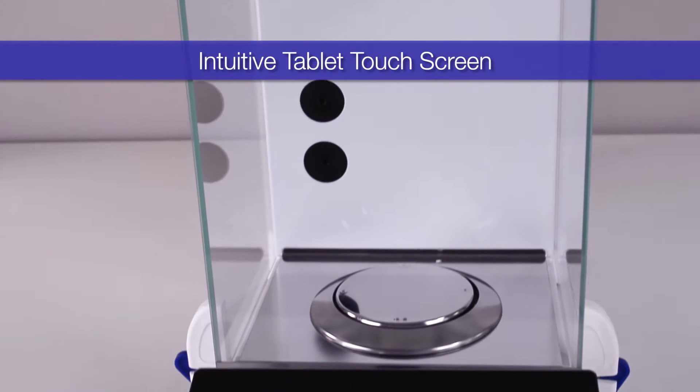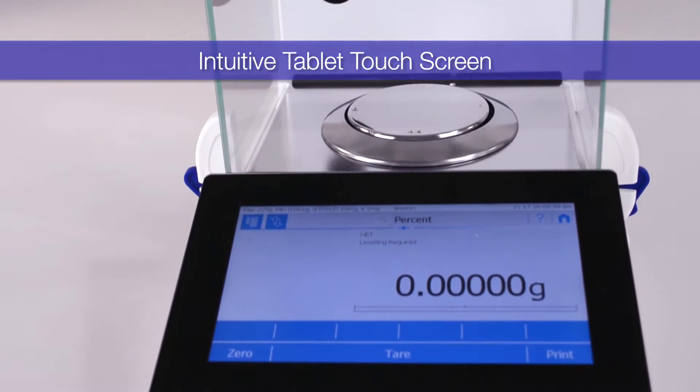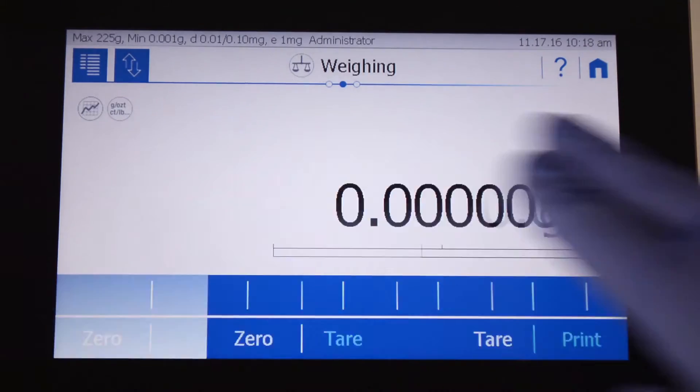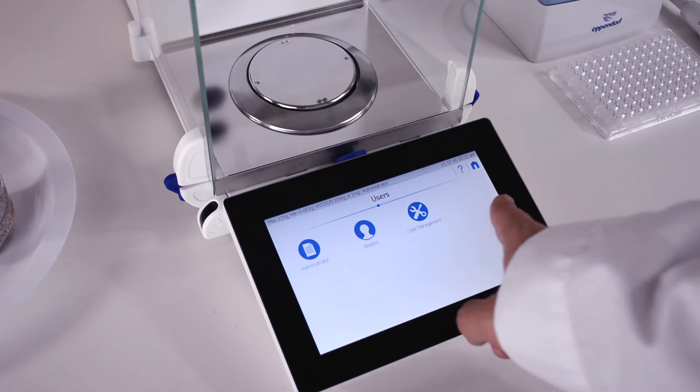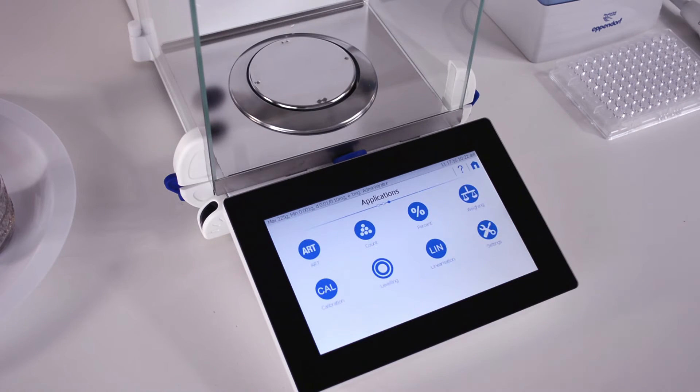The Precisa H series' greatest feature is its tablet touchscreen with software especially designed by Precisa from the ground up. You can swipe, scroll, and tap to navigate the menus.